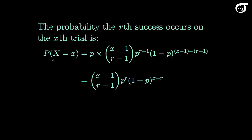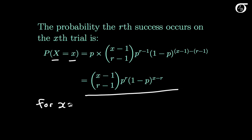The probability our random variable X takes on the value x is the product of those two probabilities, since the trials are independent. Multiplying them together and simplifying gives us our probability mass function for the negative binomial distribution. The values x can take on start at r — the smallest possible value, since we need at least r trials to get r successes — then r plus 1, and so on off to infinity, with no upper bound.